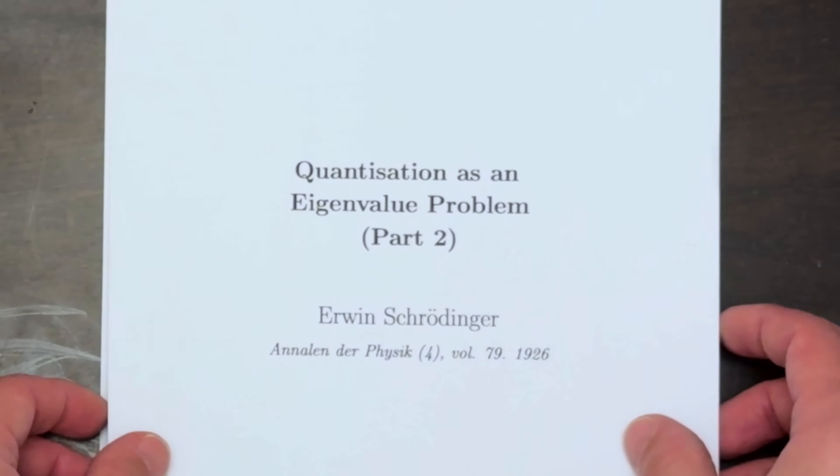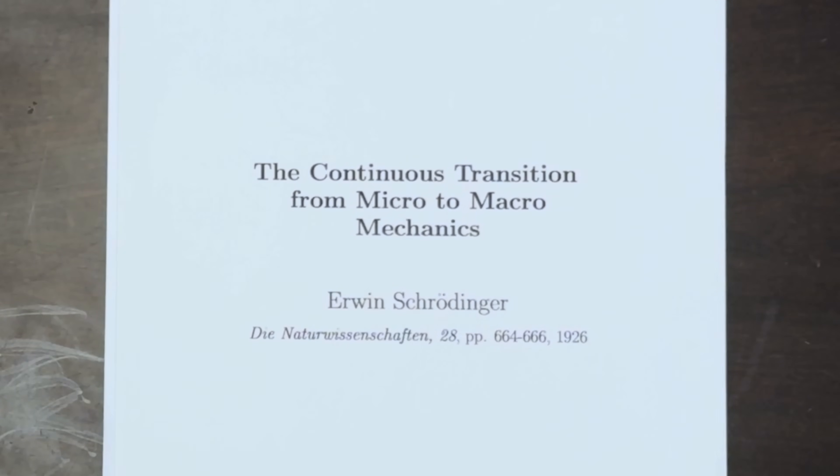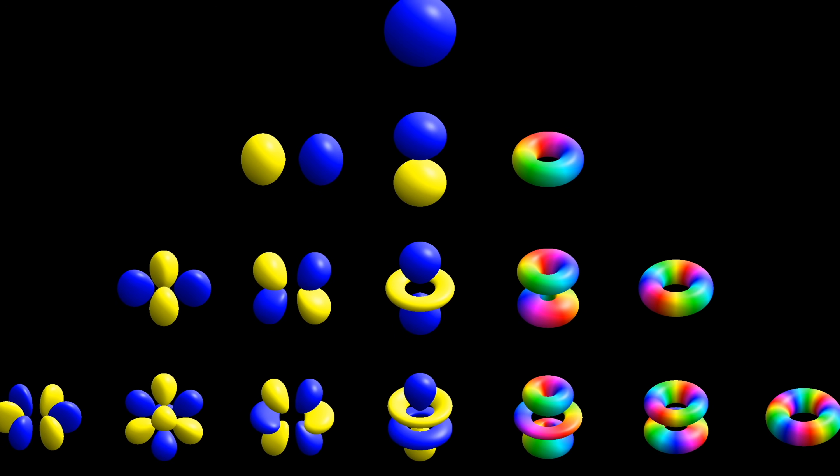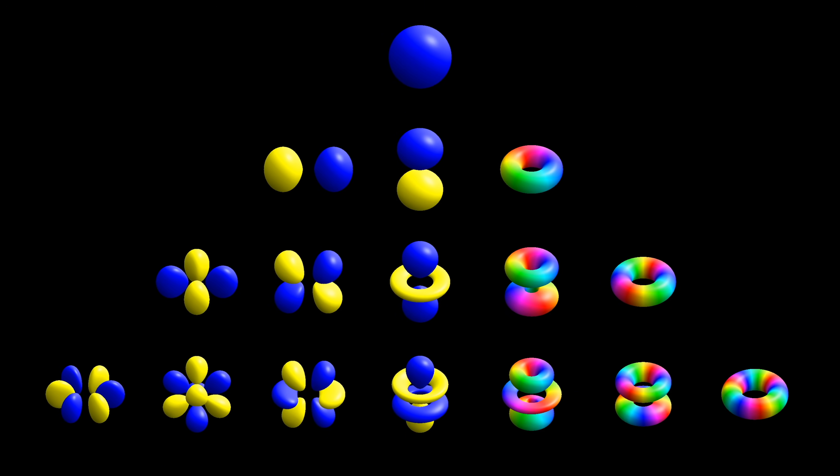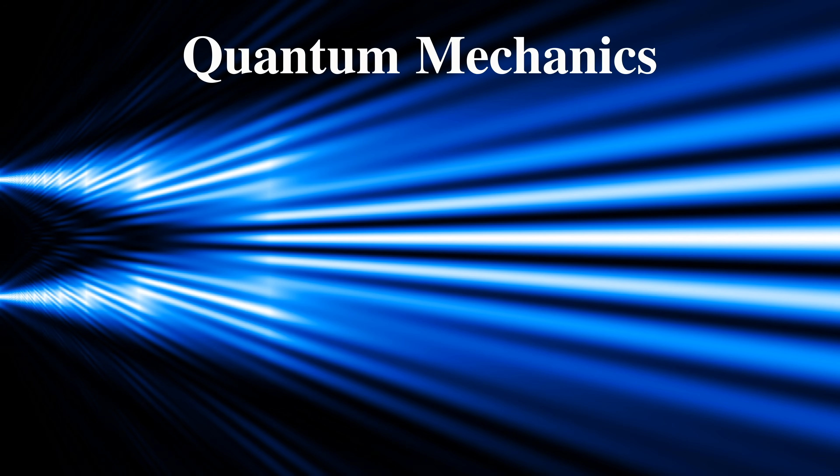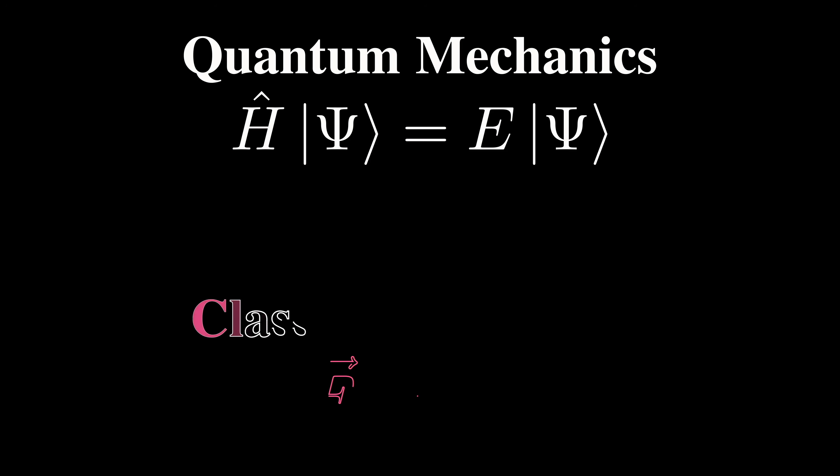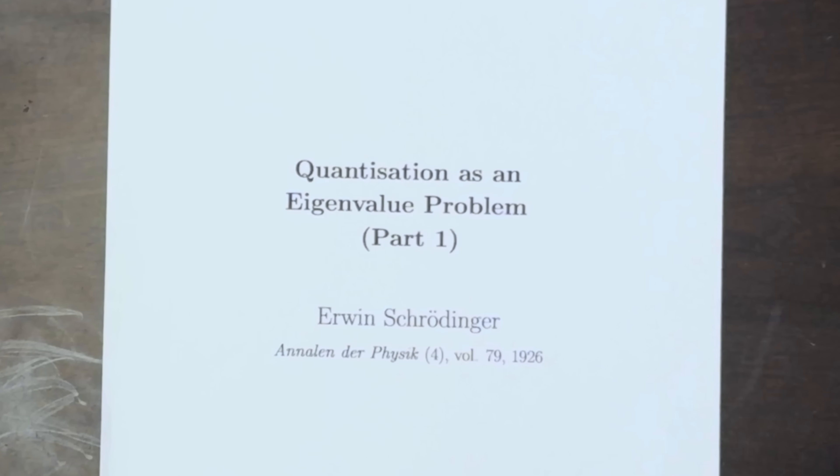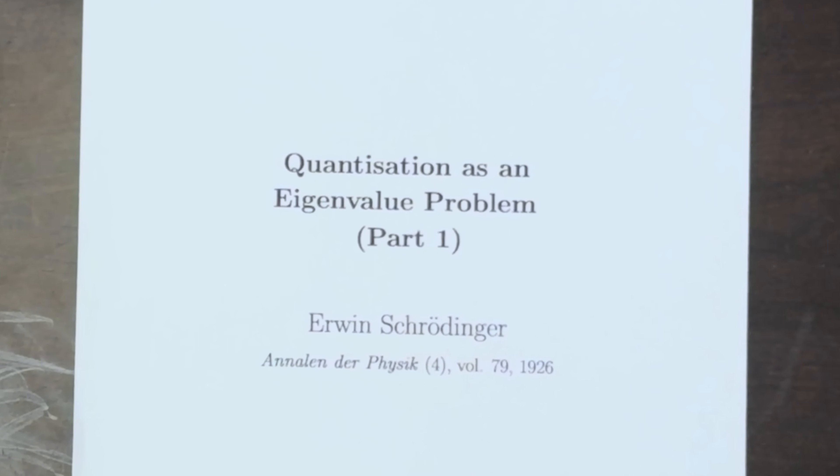So how did he do it? In 1926, Schrödinger published six papers at the rate of about one a month, where he essentially laid the foundations of an entirely new branch of physics, quantum mechanics. In the first of these six papers, the F equals MA equivalent of this new theory, Schrödinger's wave equation, made its first appearance. It is to this paper and the thought process that led to his initial discovery that we will turn our attention to.